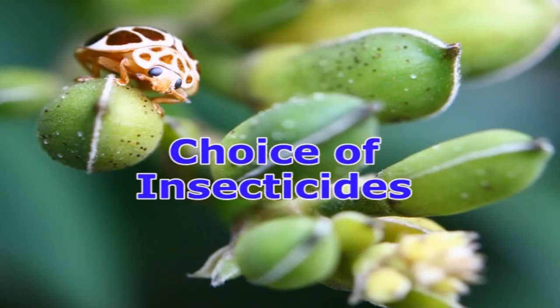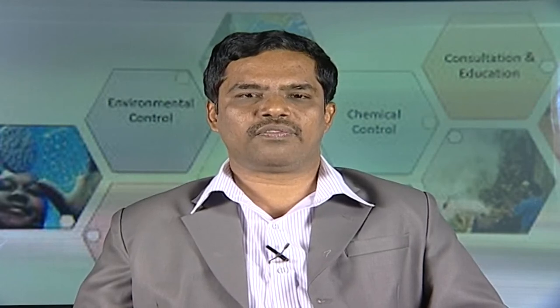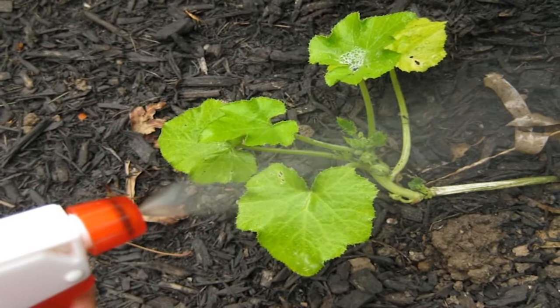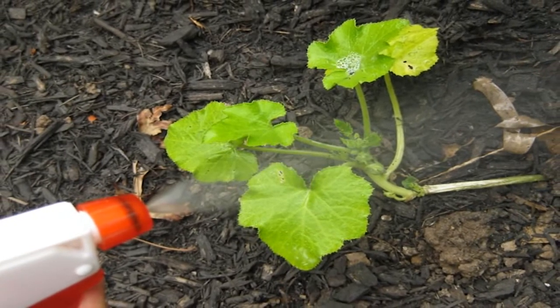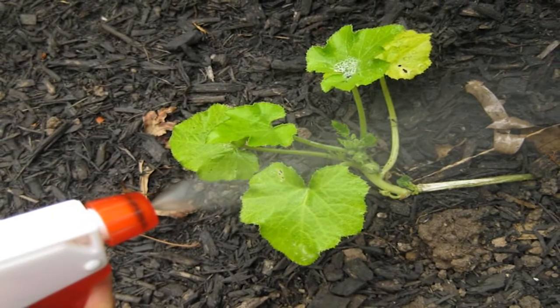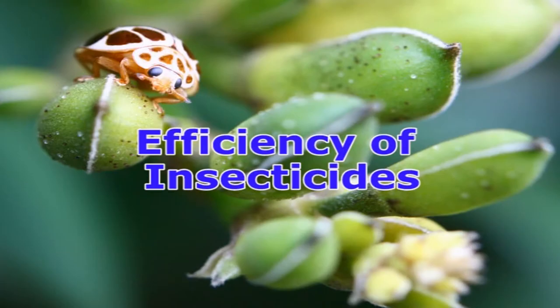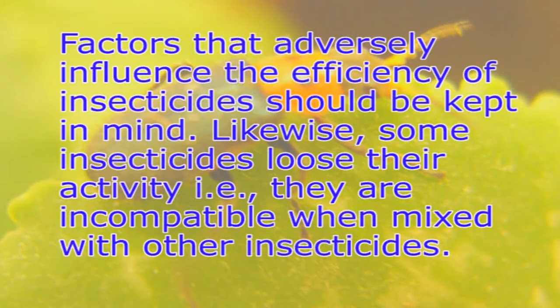For the use of insecticides, the following considerations should be kept in view. Choice of insecticides should be based on the type of mouth parts the pest possesses. A persistent organochlorine is good for insects with biting and chewing type of mouth parts, while a systemic organophosphorus insecticide is effective for insects having piercing and sucking type of mouth parts. Efficiency of insecticides: factors that adversely influence the efficacy of insecticides should be kept in mind. Some insecticides lose their activity — that is, they are incompatible when mixed with other insecticides.